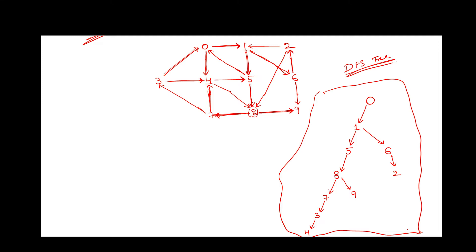We have to find the number of forward edges, number of backward edges, and number of cross edges. There is an edge from 0 to 4, which is an outgoing edge from 0 to vertex 4 — this will be a forward edge. Similarly, 7 to 4: there is an outgoing edge from 7 and an incoming edge to 4, so this will also be a forward edge.